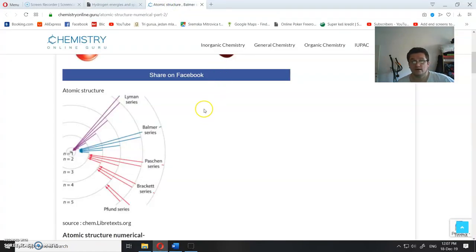And what is Pfund series? There is Lyman, Balmer, Paschen, Brackett, and Pfund series. That means Lyman series when you fall to the n equals 1, Balmer when you fall to the n equals 2.